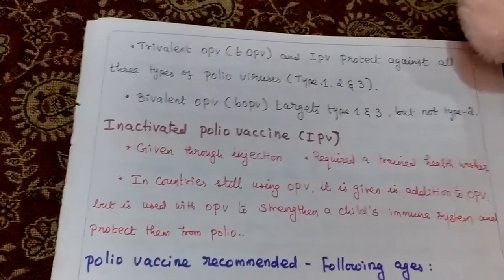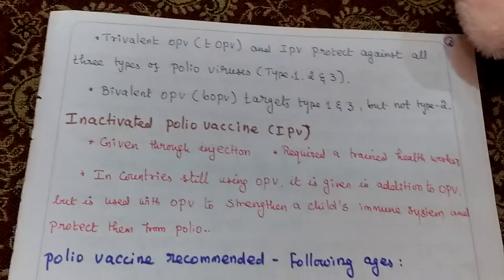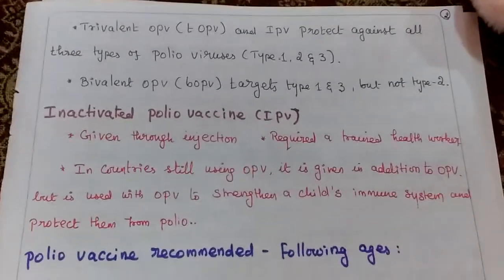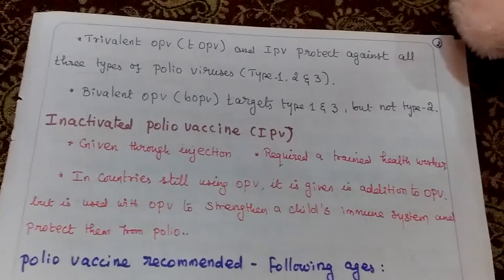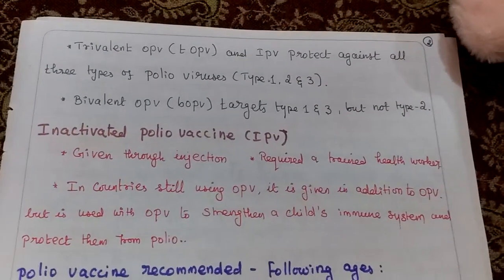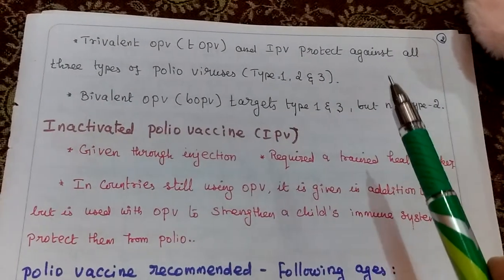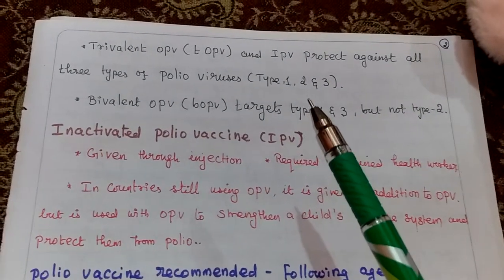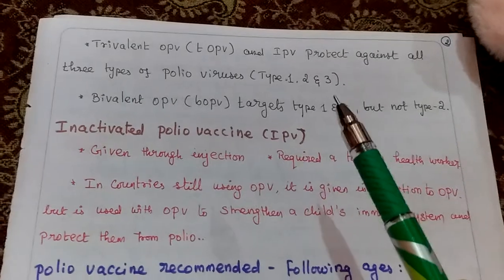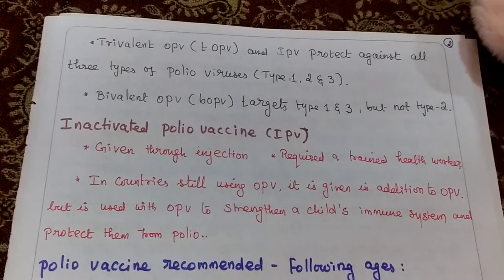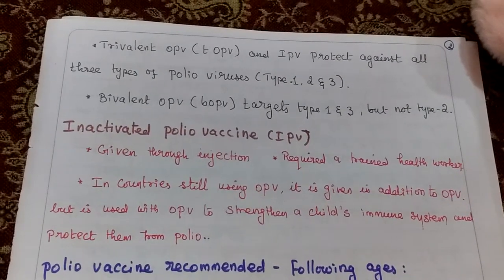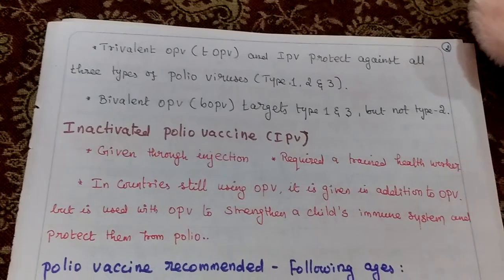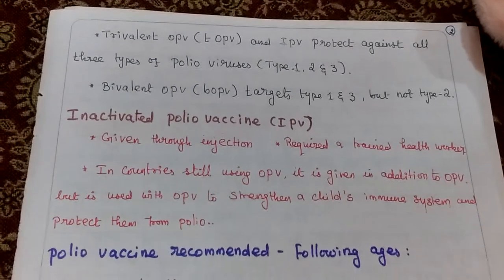Trivalent oral polio vaccine and injectable inactivated polio vaccine protect against all three types of polio virus: type 1, type 2, and type 3. However, bivalent oral polio vaccine targets only type 1 and type 3, but not type 2.